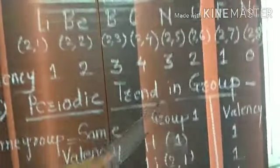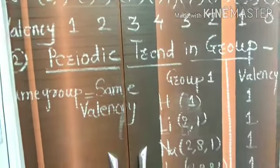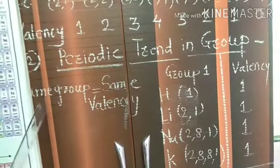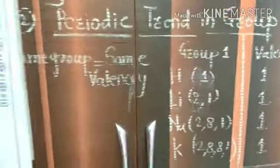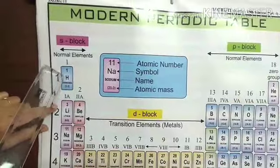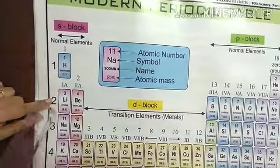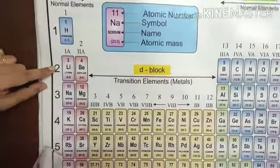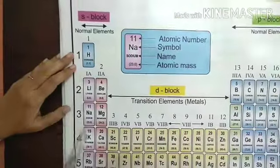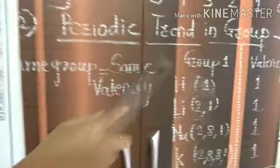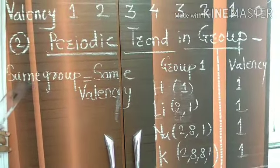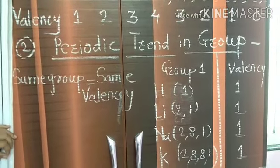Next, let us look at periodic trends in the group. We also learned about electronic configuration and valency electrons in the last lecture. In group one, there are different elements: hydrogen, lithium, sodium, potassium, rubidium, cesium, and francium. We will consider the first four elements. The same group contains the same valency.